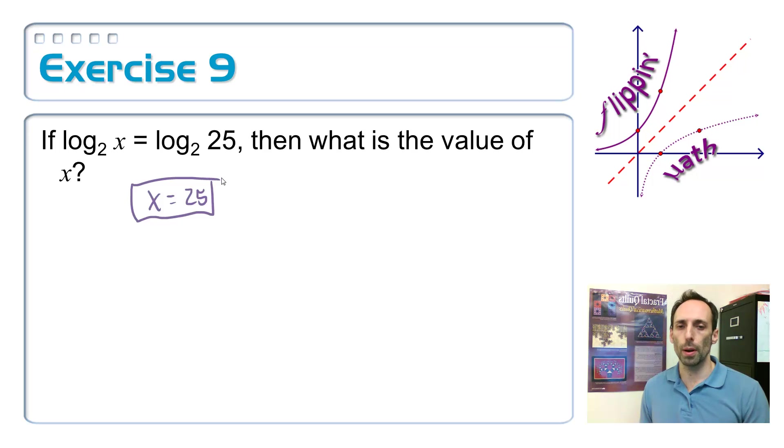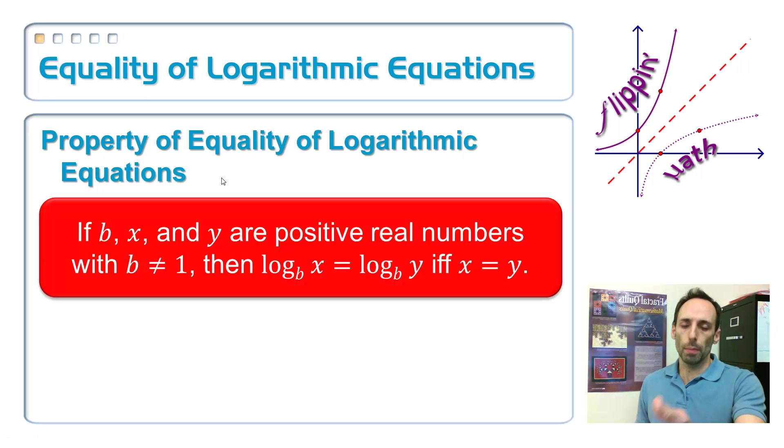This is a special little property called the property of equality of logarithmic equations. It basically says what we just did in the last exercise. If b, x, and y are all positive real numbers where b can't be 1, then log base b of x is equal to log base b of y if and only if x and y are equal to each other.